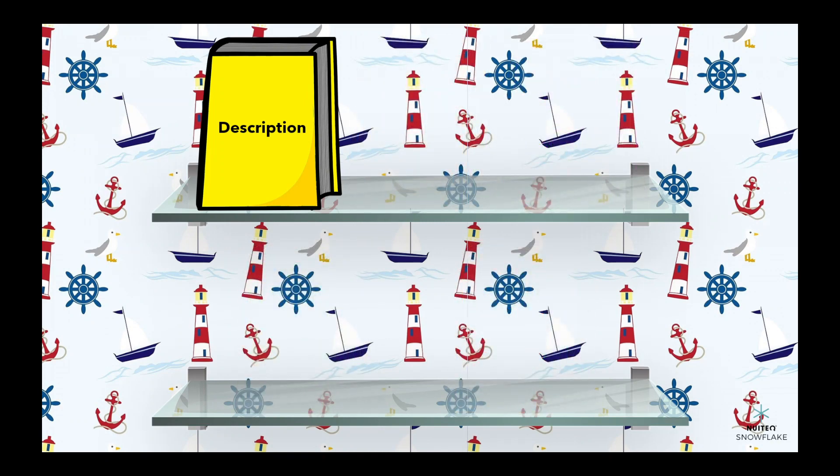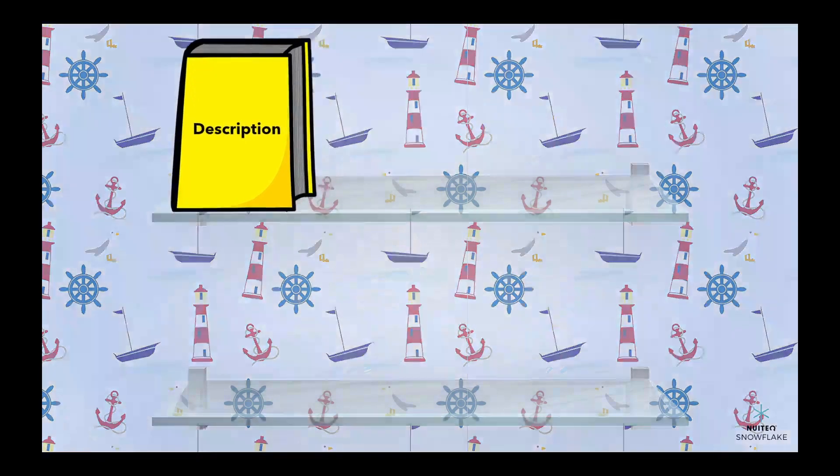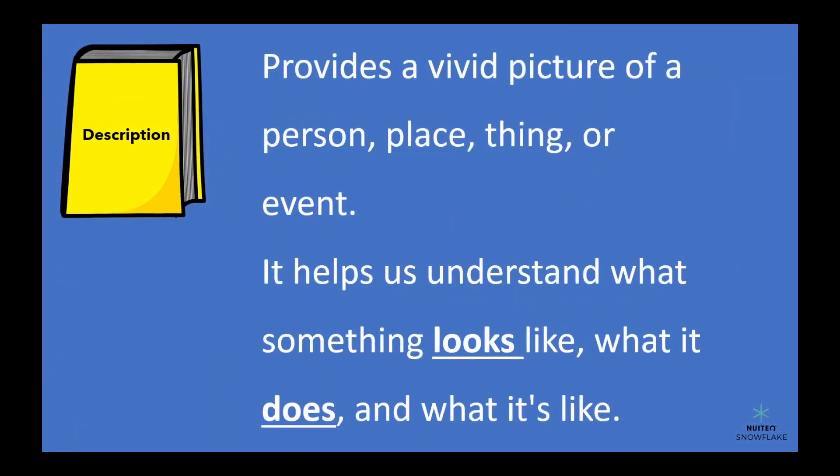Let's start with description. This type of text structure provides a vivid picture of a person, place, thing, or event. It helps us understand what something looks like, what it does, and what it's like.